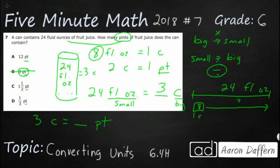So once again, small to big, we are going to divide. And so we need to divide three by two. So we're going to take three, we're going to divide that by two. You can do it several ways here.